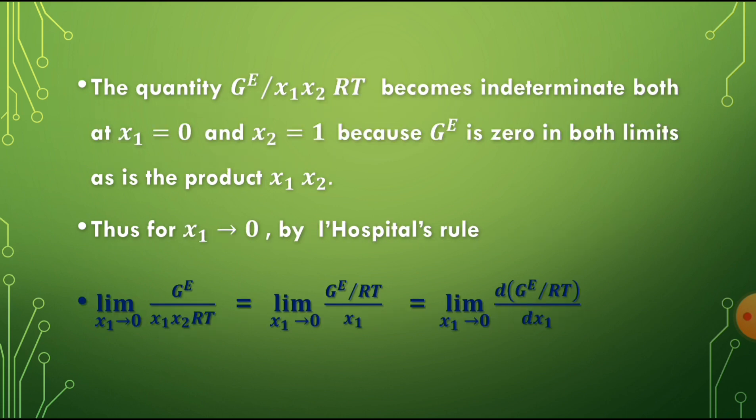We evaluate the quantity G_E by x1 x2 RT. It becomes indeterminate when x1 equals 0 and x2 equals 1, because G_E is 0 in both limits, and similarly the product x1 x2 is also 0. So for x1 tending to 0, by L'Hôpital's rule — a rule from mathematics — the limit of G_E by x1 x2 RT as x1 tends to 0 becomes the limit of (G_E by RT) divided by x1.